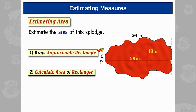Next, calculate the area of the rectangle. So that's length times width, which is 26 times 13 equals 338. Now, since this is only an estimate, I'm going to round this to two significant figures, which gives me an answer of 340 metres squared.